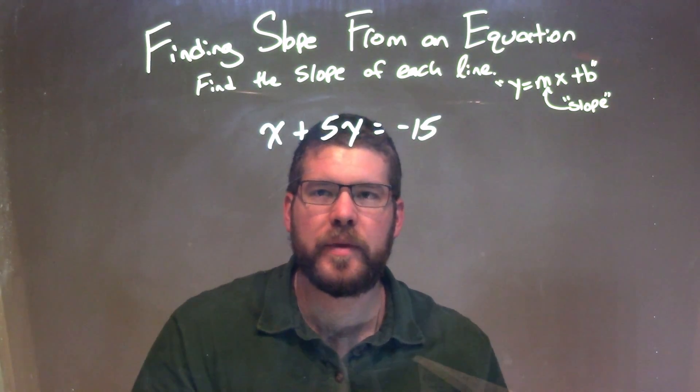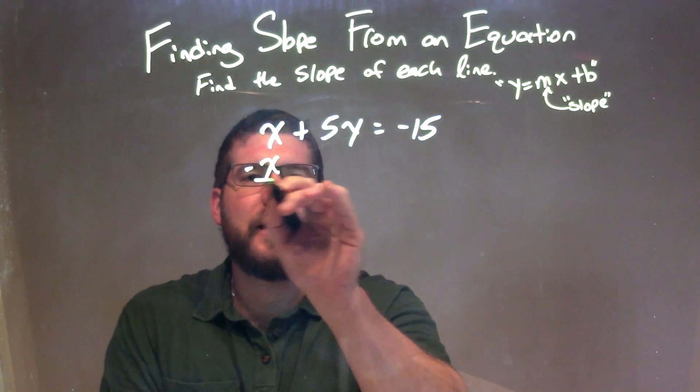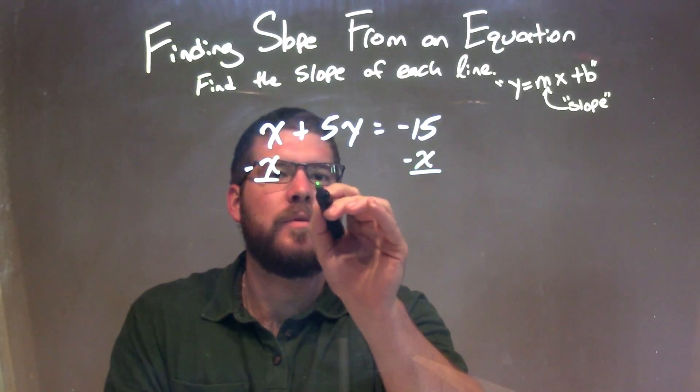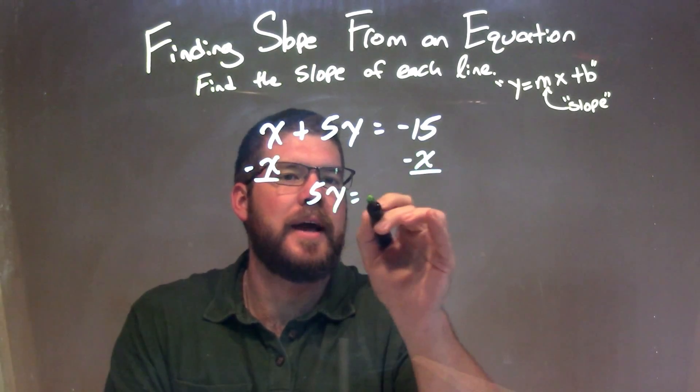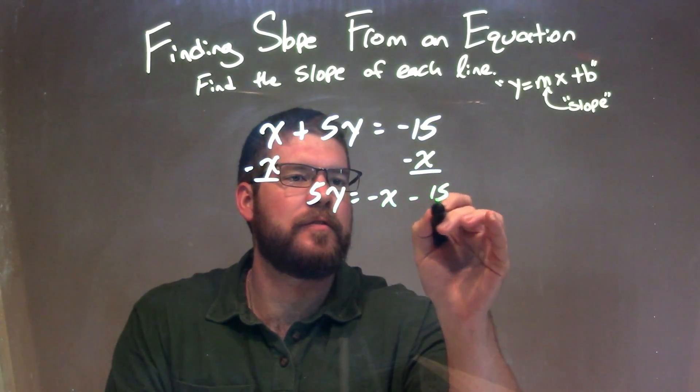Well, I want to get y by itself. So to do that, I first subtract x from both sides, giving me 5y equals negative x minus 15.